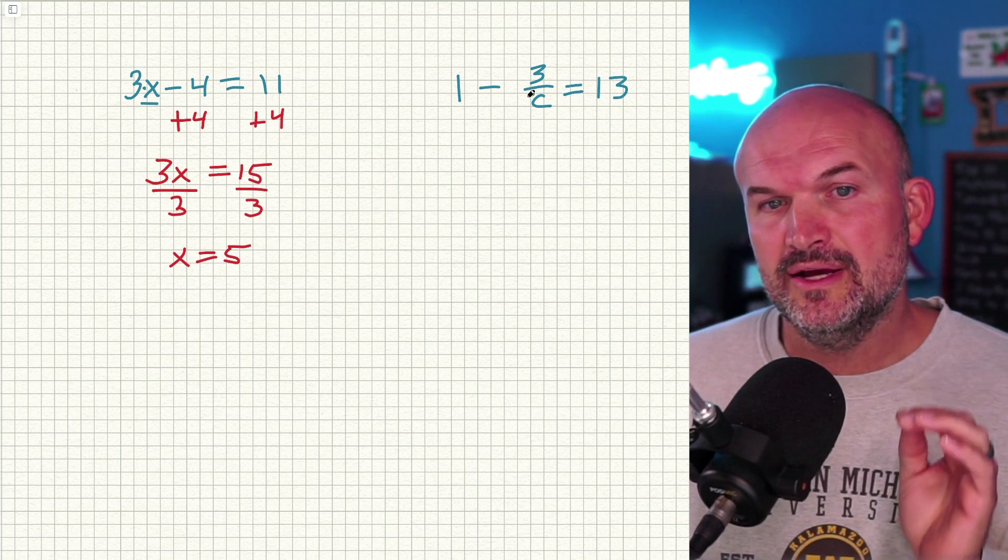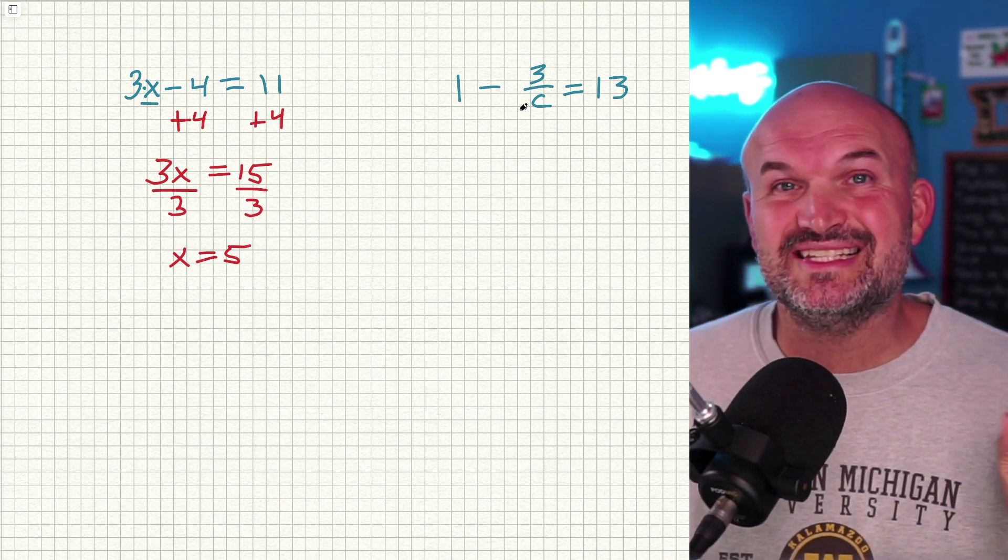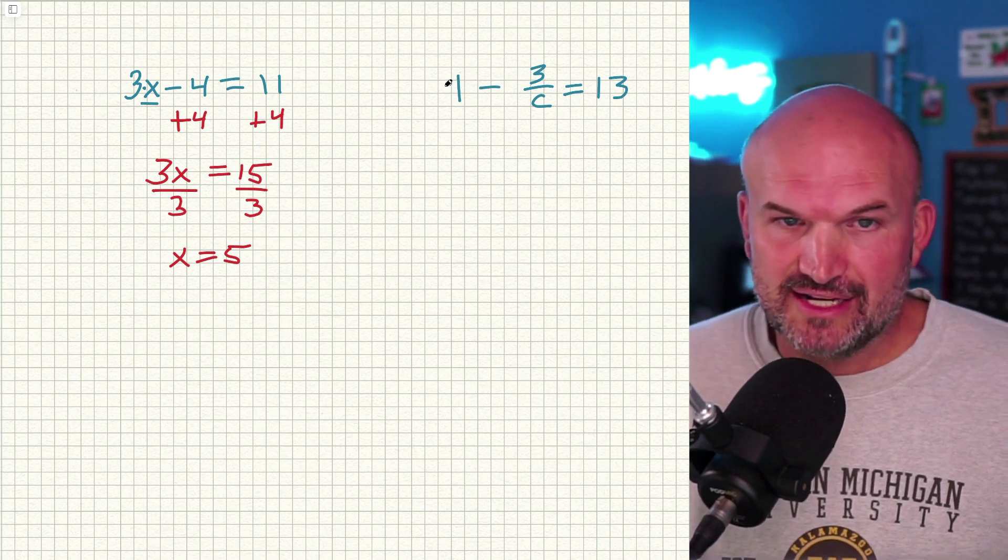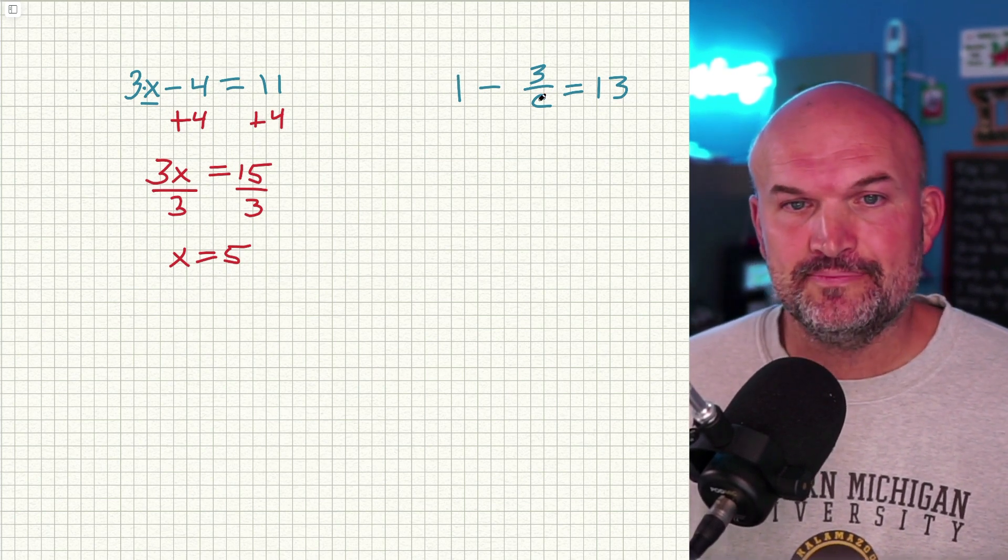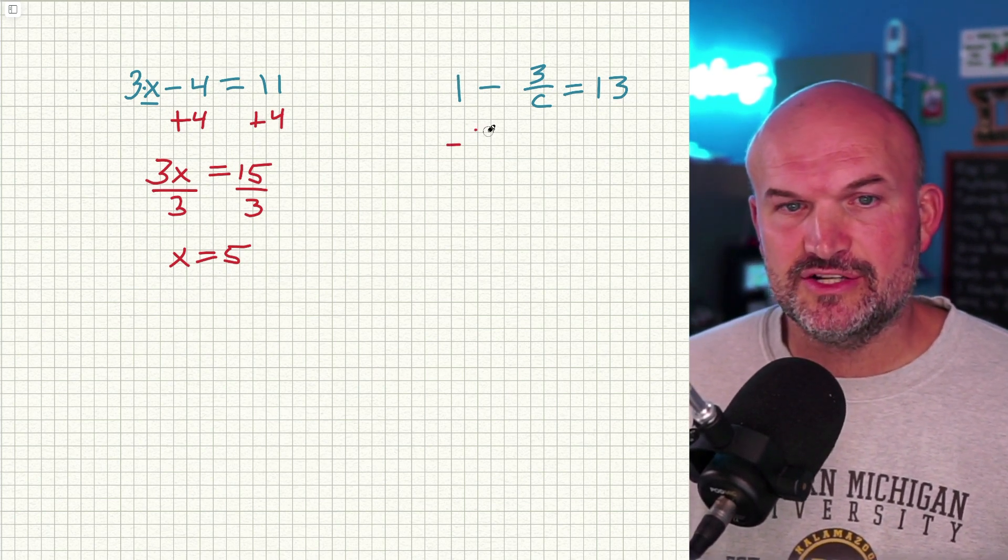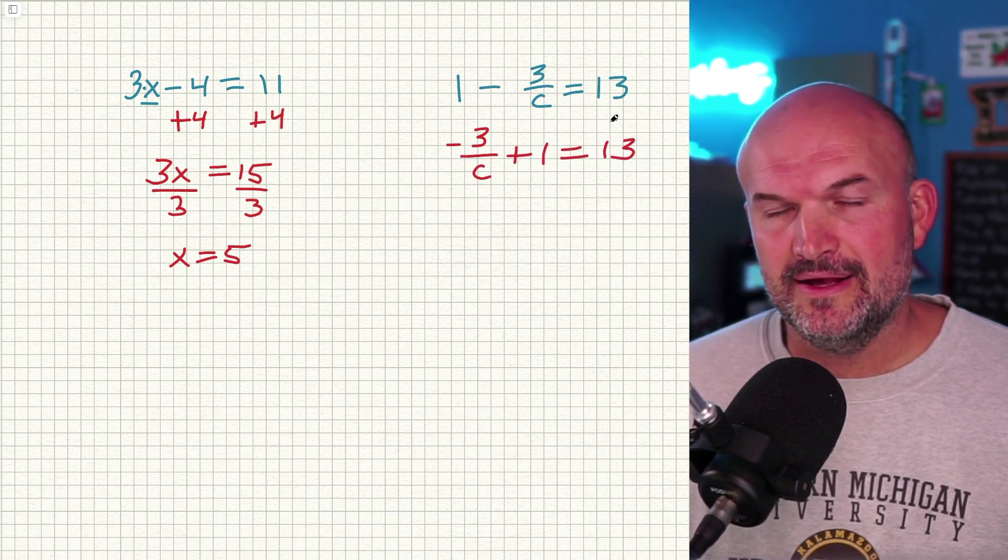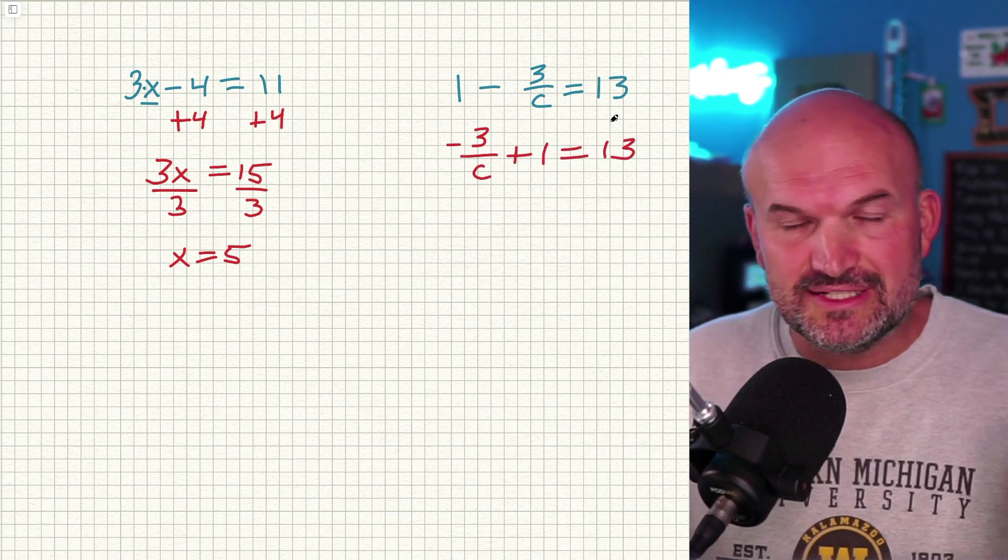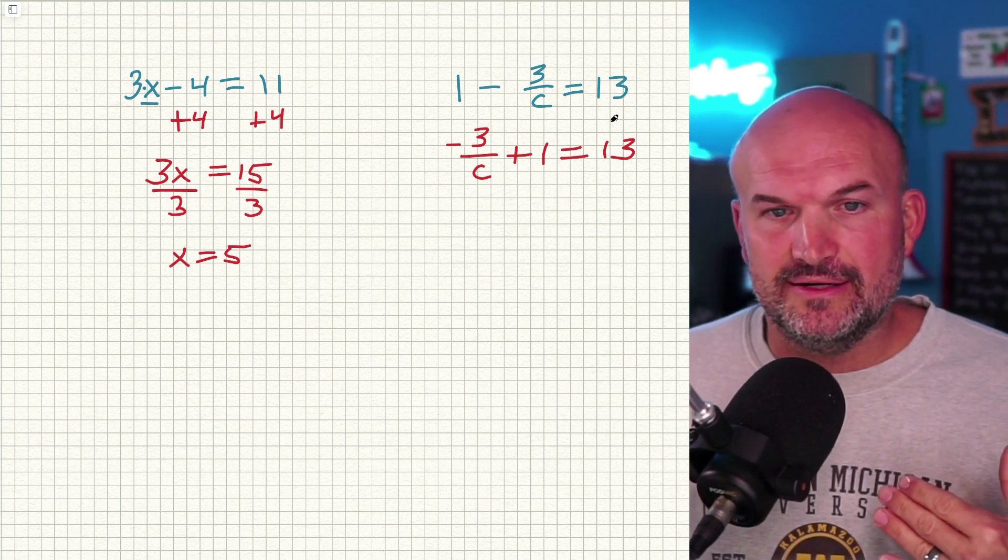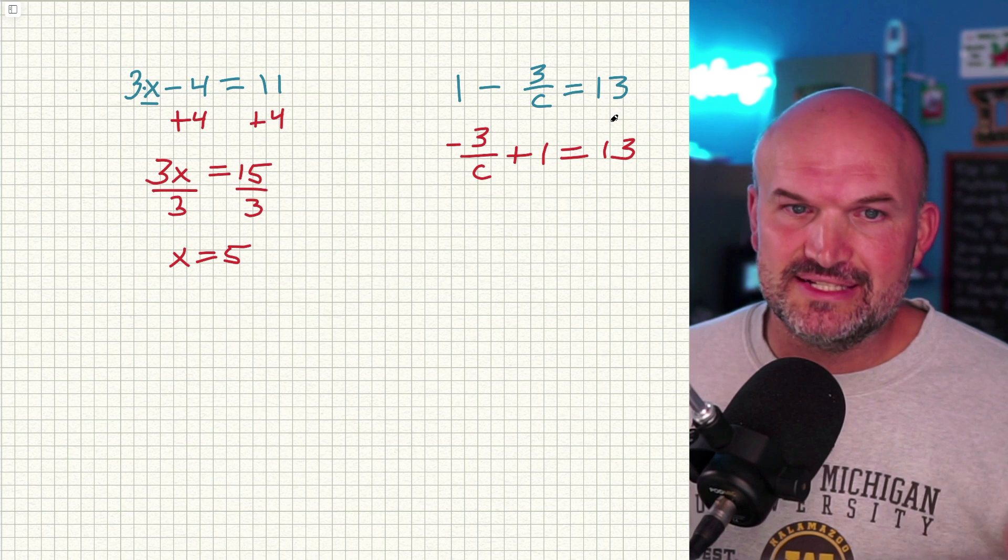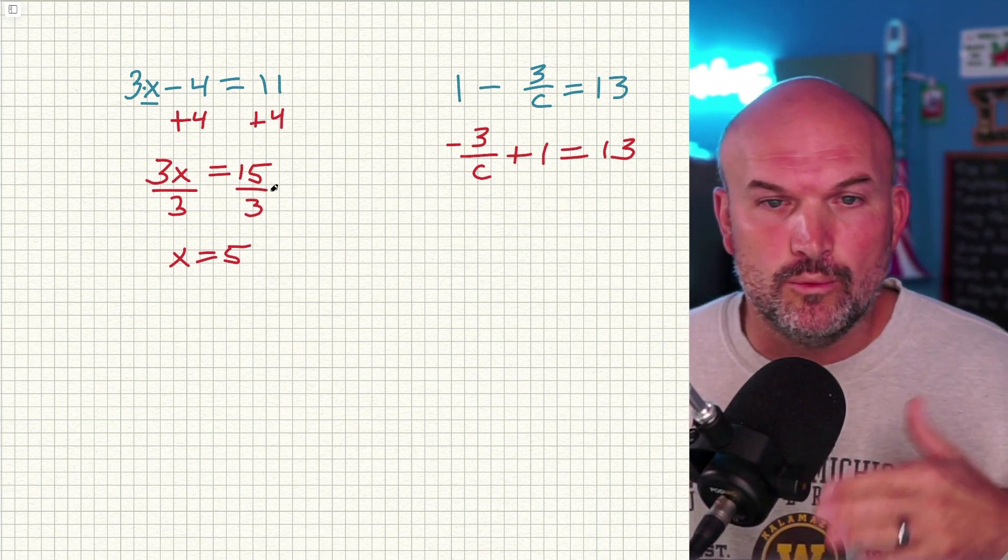Now, remember though, it's very important to make sure you keep the signs consistent. This is a negative three C, and this is a positive one. If it was a negative one, then we'd have a negative sign in front of it. So what I'm first going to do is rearrange this. So it's -3C + 1 = 13. This just helps me visualize. You don't technically have to do this, but in the purpose or the idea of avoiding mistakes, this helps me make sure I understand what I'm dealing with.